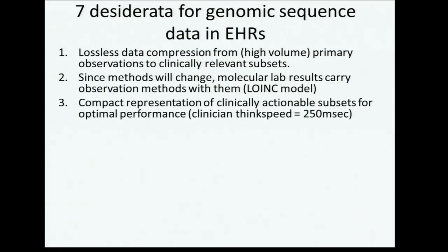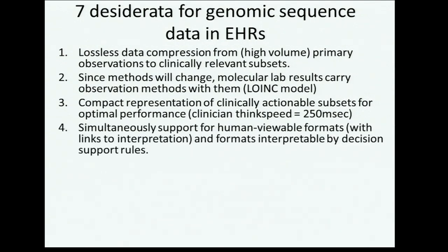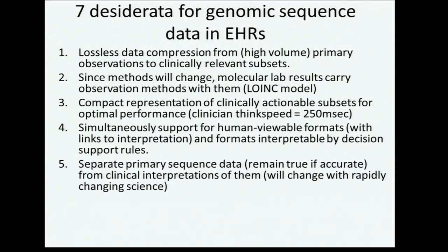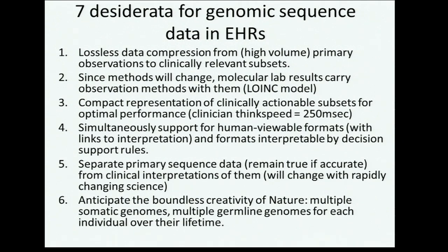Compact representation of clinically actionable subsets came directly from Clem McDonald, who coined the notion of clinician think speed — his observation that it takes a clinician about a quarter of a second to get the next idea when they see something on the screen. Any system at least that fast can stay ahead of the clinician's need for additional information. There was also a big emphasis on concurrent and probably linked versions of the same knowledge — both human-readable and usable by decision support rules. The idea of separating the primary sequence data, which presumably remains accurate throughout one's lifetime, from the clinical interpretations that we expect to change as science changes.